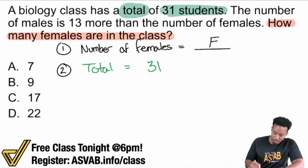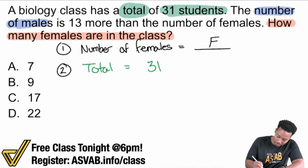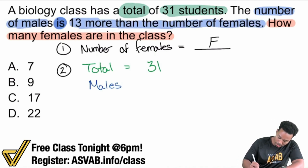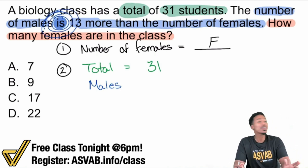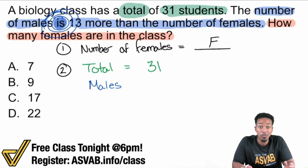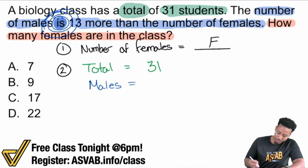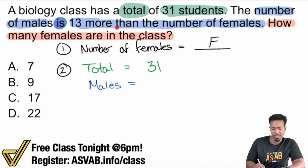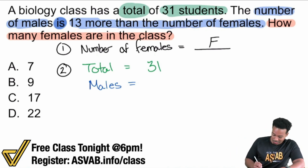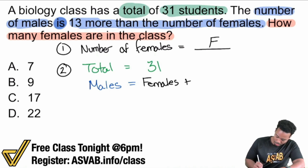Now, what else do I see? The number of males is 13 more than the number of females. So what does that mean? When in doubt, draw it out. The number of males is 13 more than the number of females. What does the word 'is' mean in math? Equals — is, was, will be, are, have — all of those mean equals. So: males equals females plus 13. That's the number of males. We'll say the number of males is equal to females plus 13.